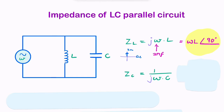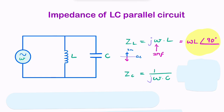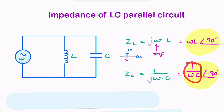Anything in the positive j direction has an argument of 90 degrees, or π/2 radians. For the capacitor, it's very similar, but the impedance is 1/(jωC). In polar coordinates, 1/j equals negative j, so that lies on the negative imaginary axis, giving an angle of −90 degrees. So we write it as 1/(ωC) with an angle of −90 degrees.